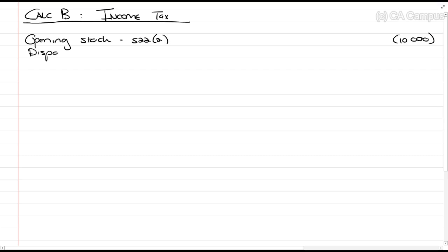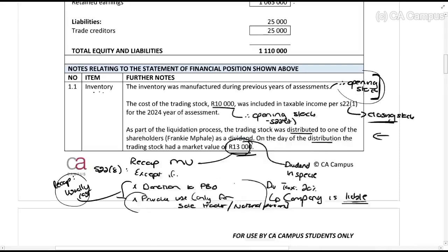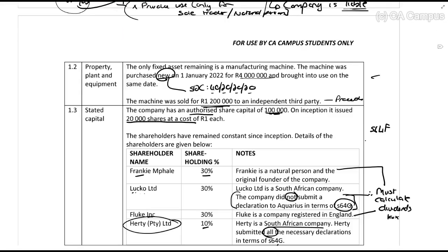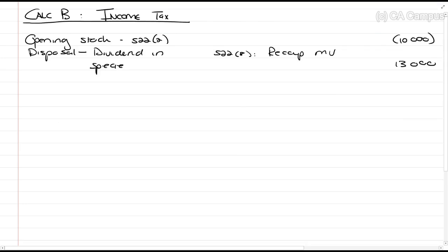Then, there's a disposal as a dividend in specie. So, section 22.8 says, recoup the market value. And the market value was 13,000. If I remember correctly, yes, 13,000. So, already, I want you to see for accounting, and if you haven't paid attention to it, make sure you see the difference in accounting. Accounting will have a negative 10,000, but for tax, we'll have basically a 3,000 rent taxable income.